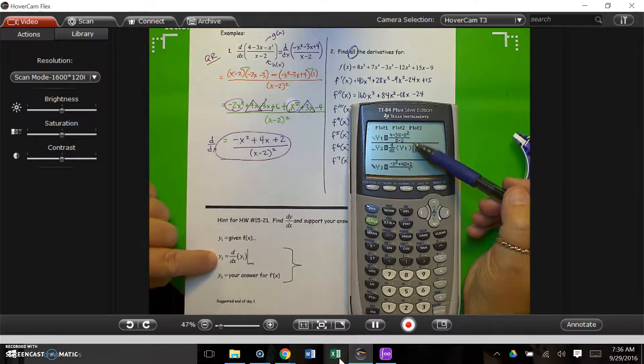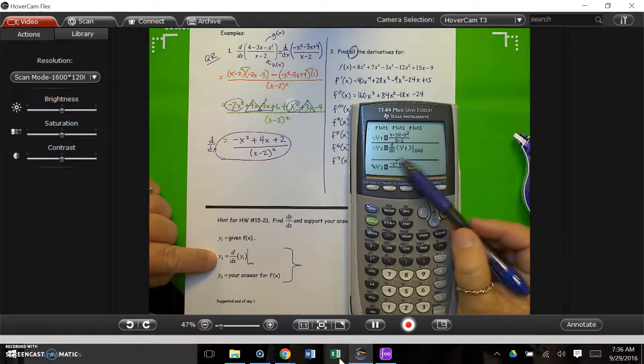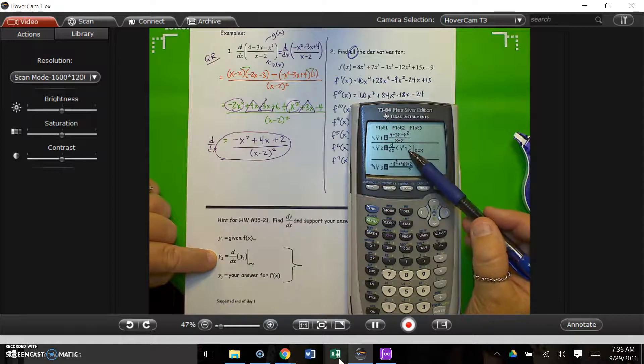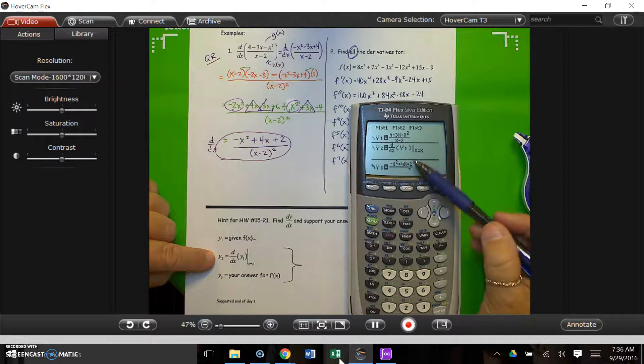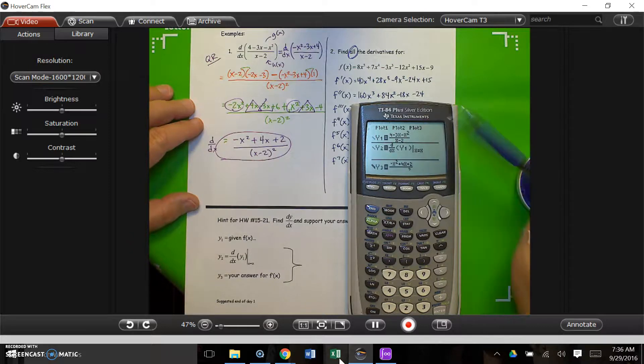In y2, put in your derivative using math 8. So, a special notation on that, remember the variable is x. Put in your function y1 here, so you can use alpha f4 for that. And then, instead of a particular value for the derivative, you put the variable x there. Okay?